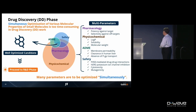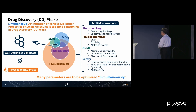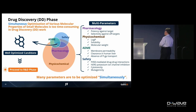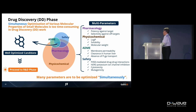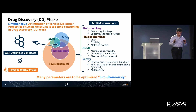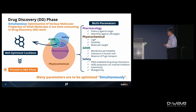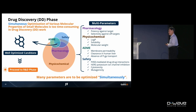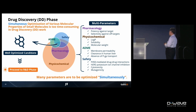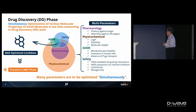More concretely, the molecular properties must all be optimized simultaneously in drug design. When we optimize a single property, some other properties will become worse. Simultaneous optimization of many molecular properties is required, and this is the reason why drug design is so time-consuming.